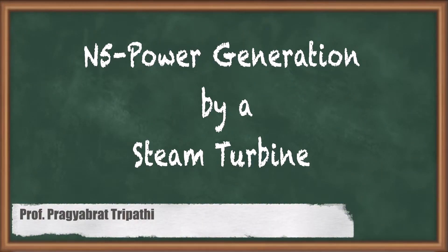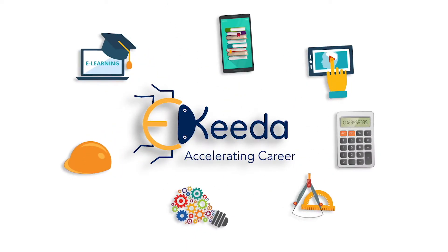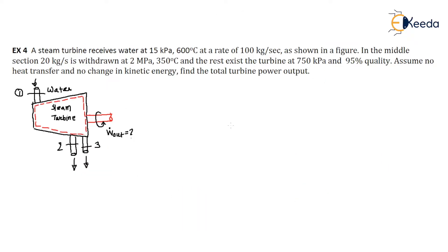Hello my dear friends. In this video we will learn about how power is developed from the steam turbine. We know that steam turbines are used in a power plant. A high pressure fluid enters the turbine where there is a rotor with blades mounted on it, connected to a shaft. When the high pressure fluid strikes the blades, the rotor rotates and, coupled with the generator shaft, it rotates to produce electricity.